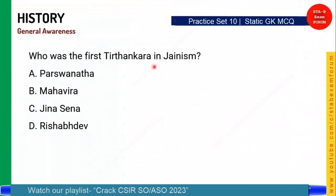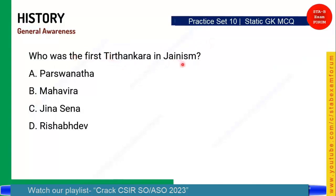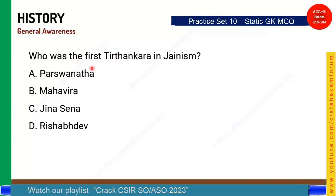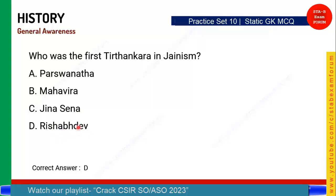The next question is from ancient history: Who was the first Tirthankar in Jainism? Jainism is a religion, and all listed are Tirthankars, but who is the first one? The correct answer is Option D — Rishabh Dev. Rishabh Dev is the first Tirthankar in Jainism.